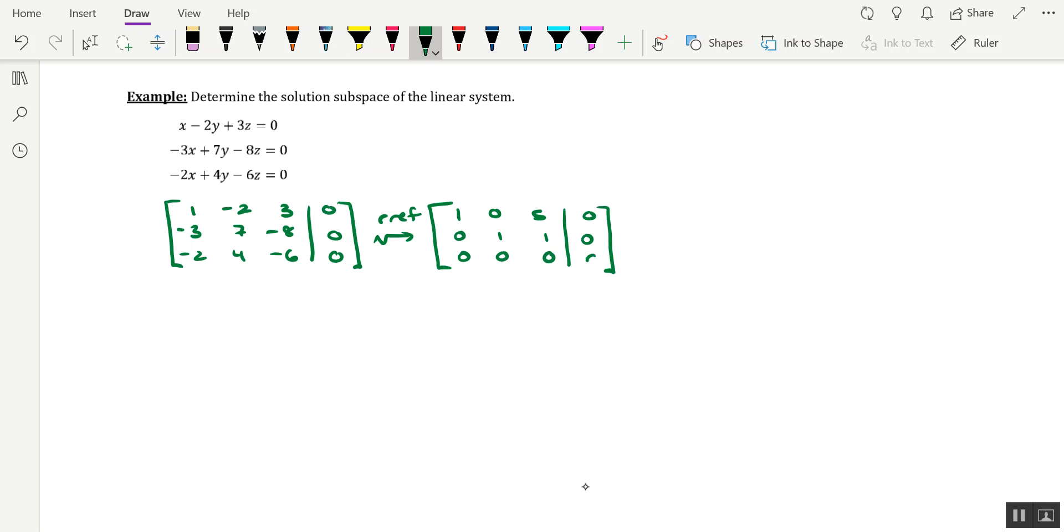And then third row is nothing but zeros. So it looks like we might need a parameter here. Keep in mind that the first column is for the variable x, second column for y, and third column for z. Looks like both x and y correspond to leading ones, so z is going to have to be the parameter here.